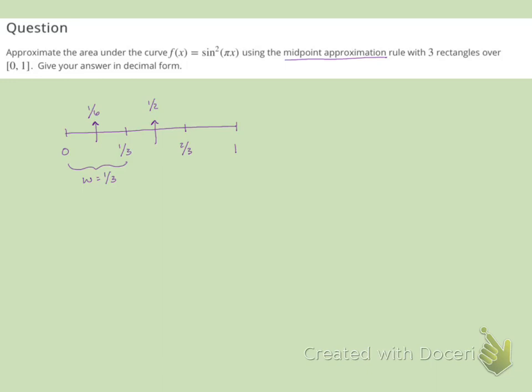So I have zero, 1/6, 2/6, 3/6 which is 1/2, 4/6, 5/6, and then all the way to one.